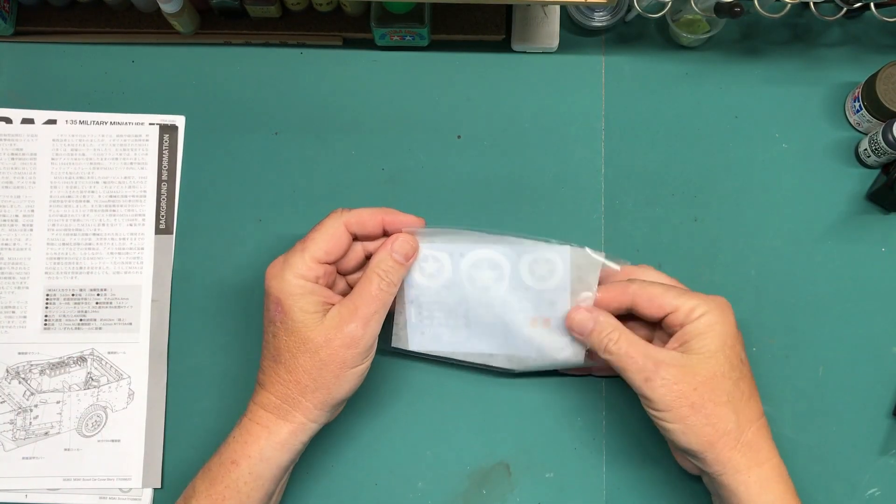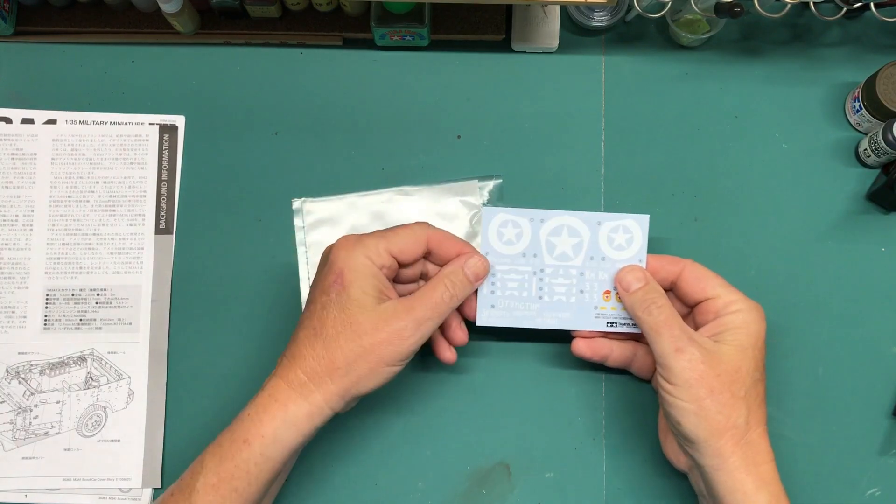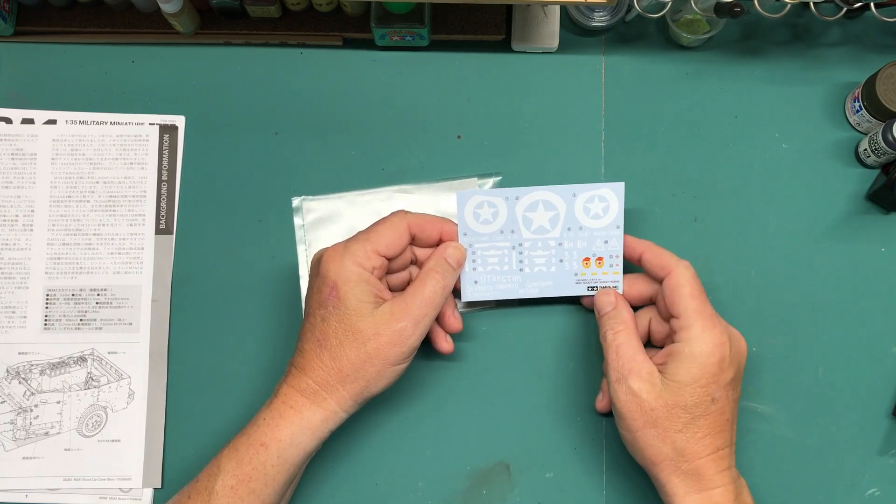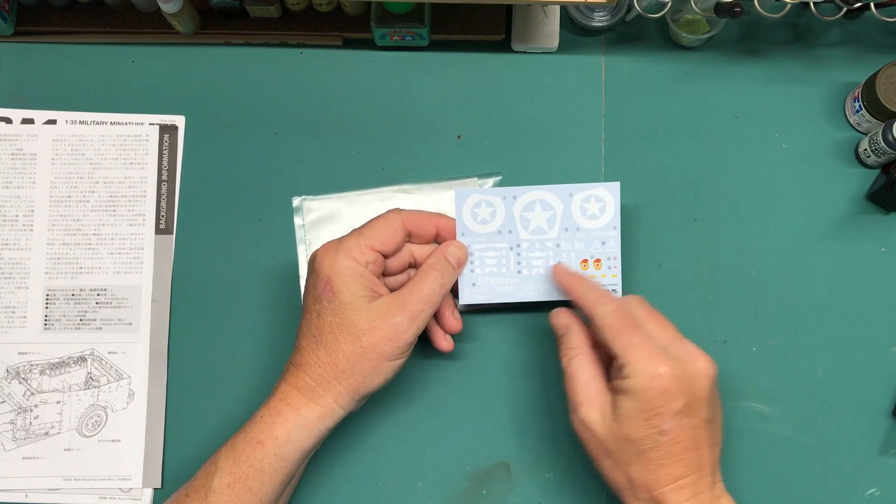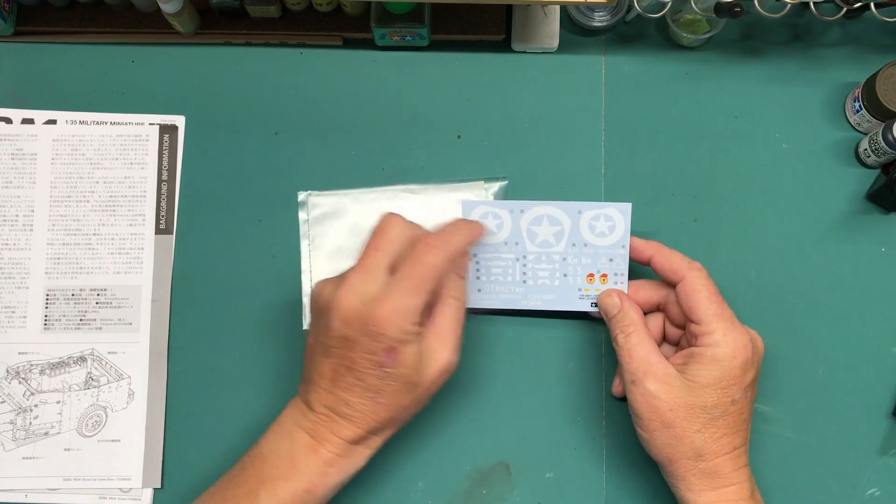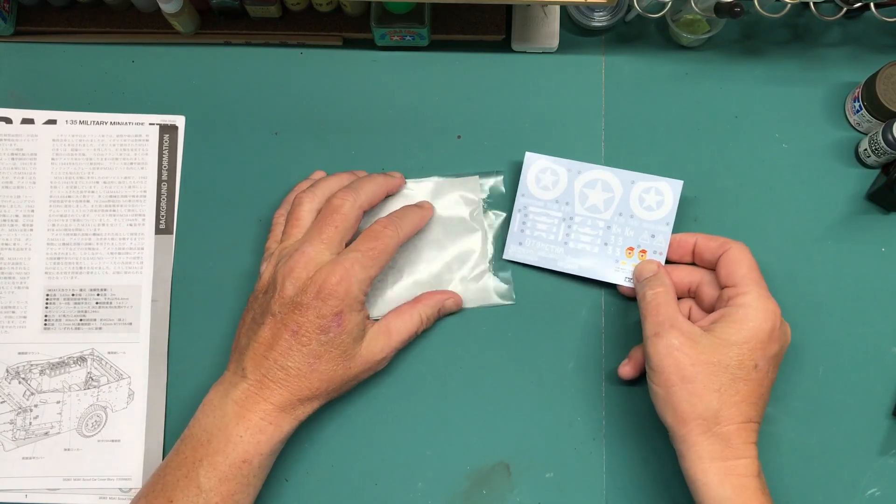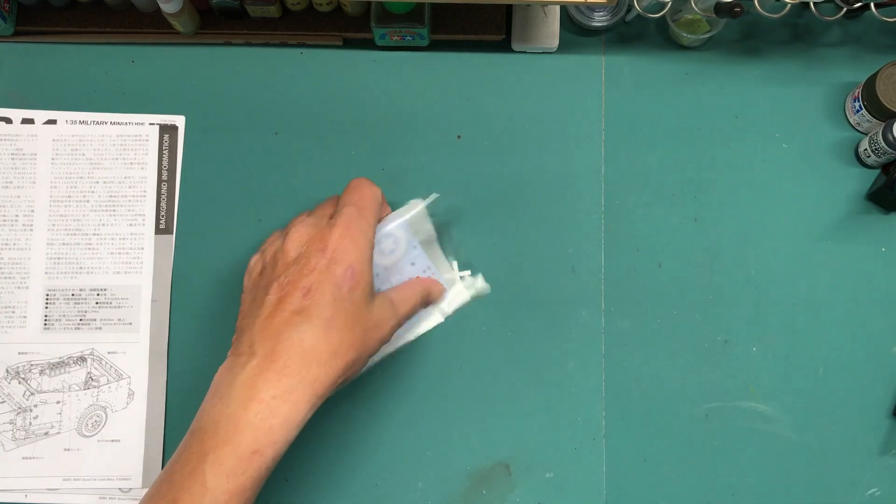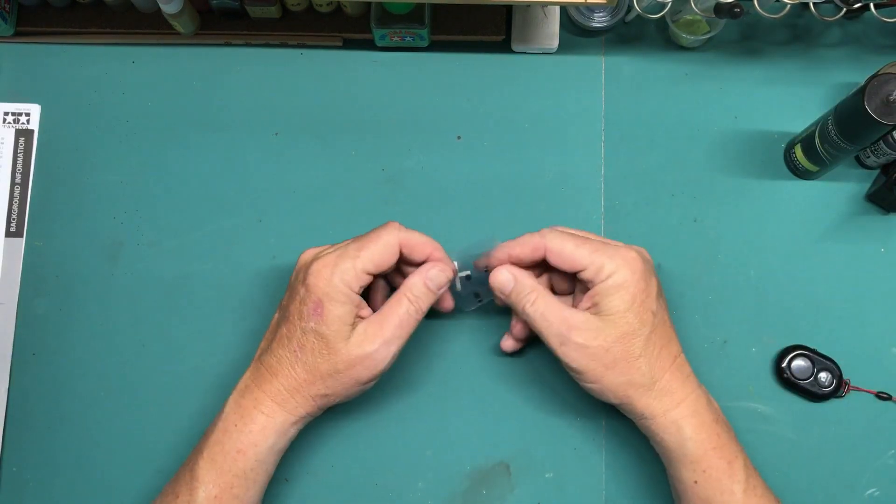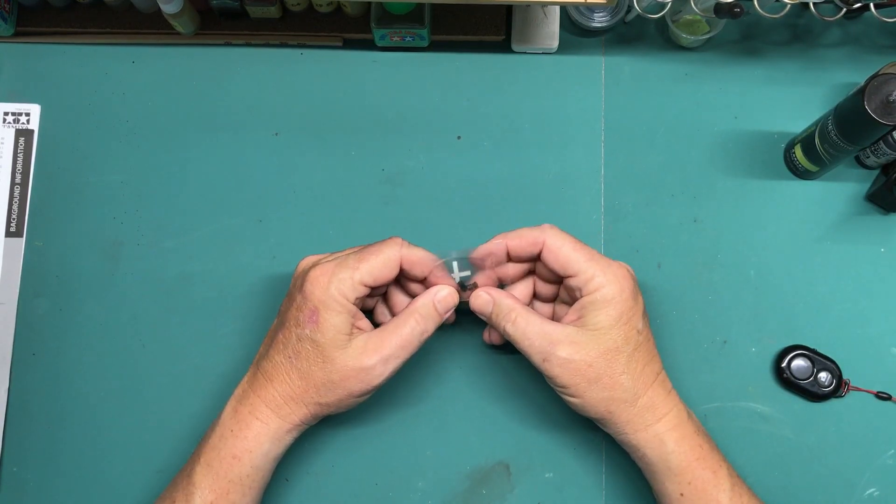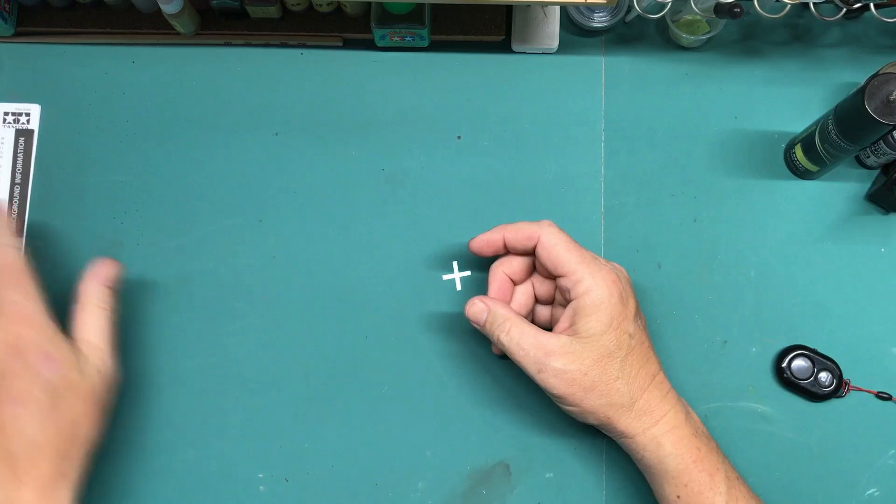Then we have the decals. And this is the one that goes on that one vehicle. That's a really big decal. These are smaller, a little bit more manageable than the U.S. decals. So there's those. And then naturally you got the poly caps for doing wheels.